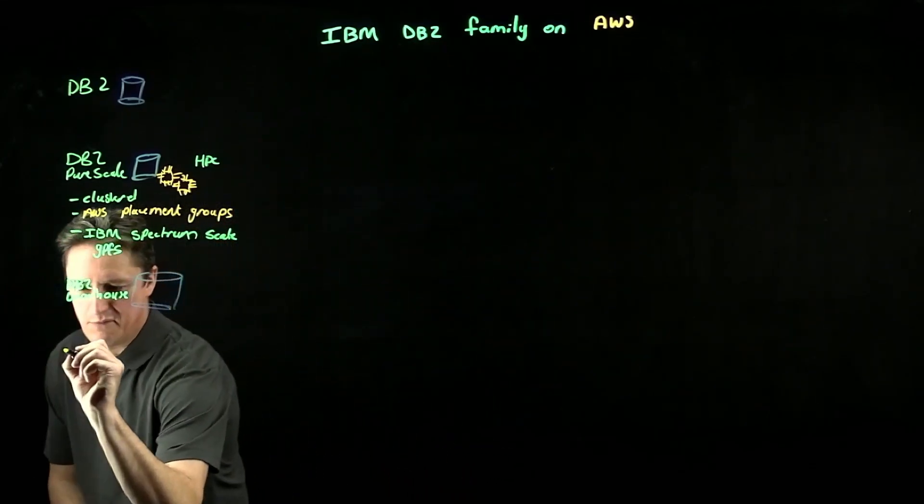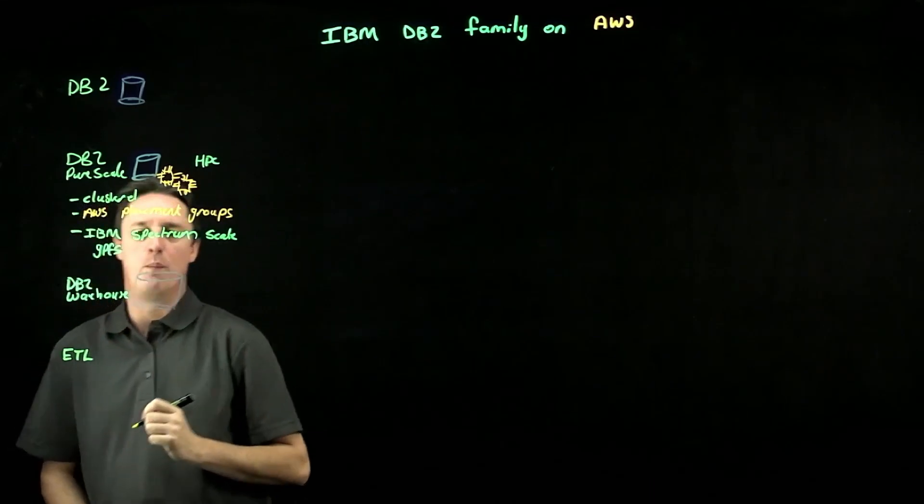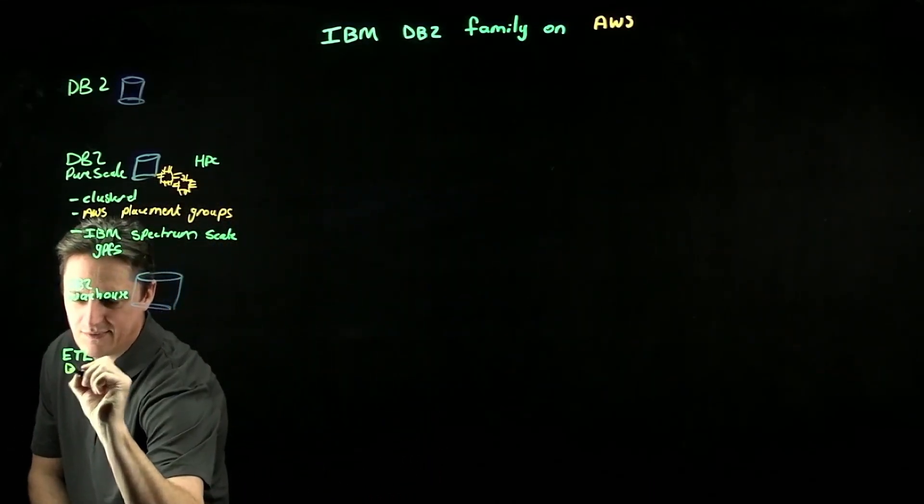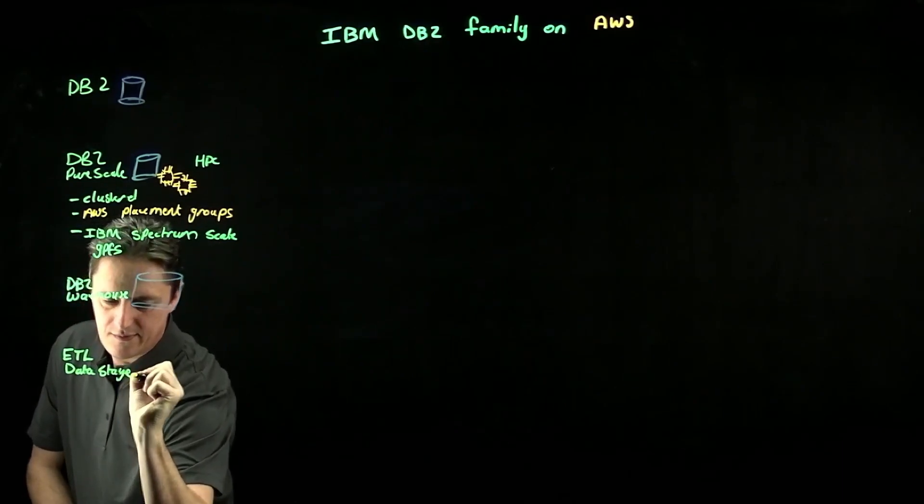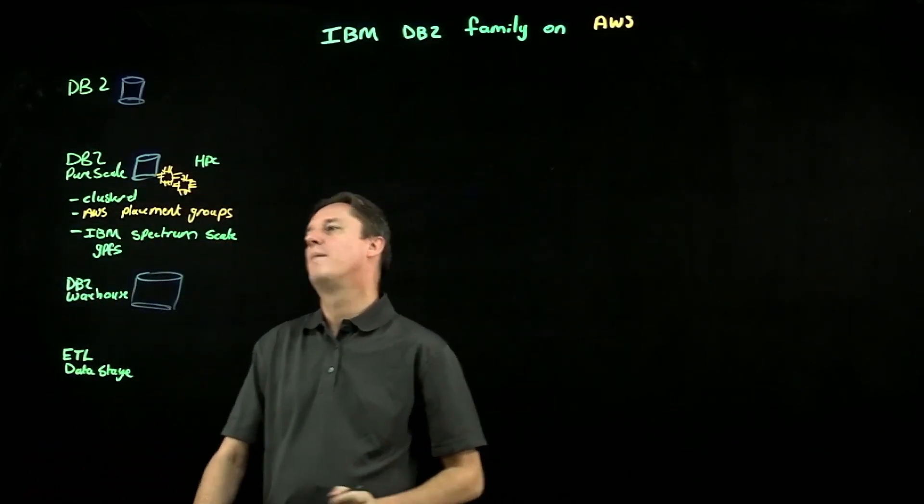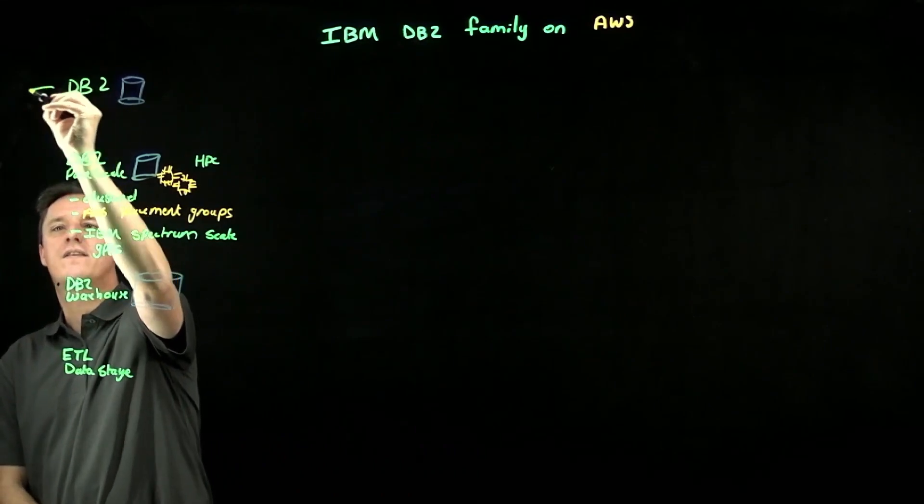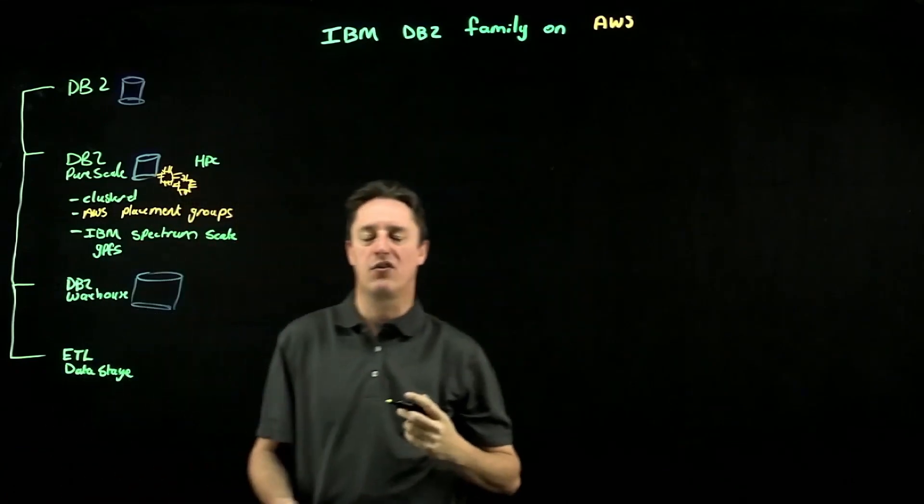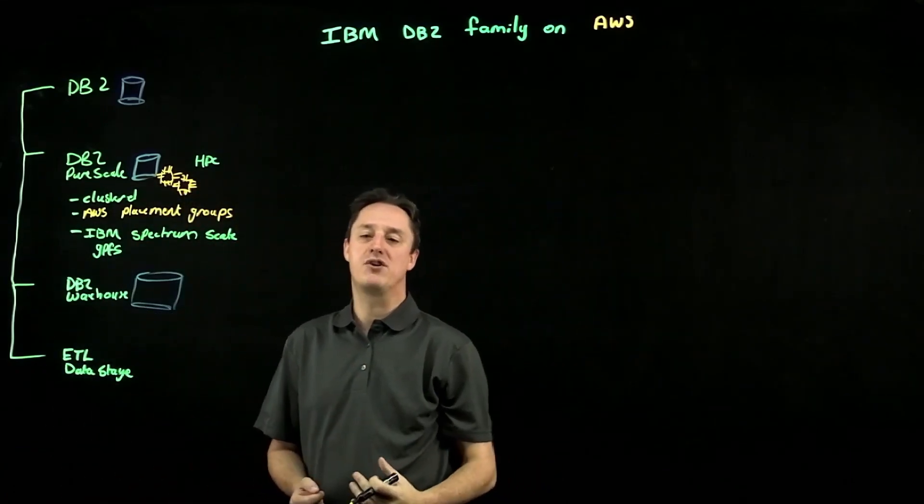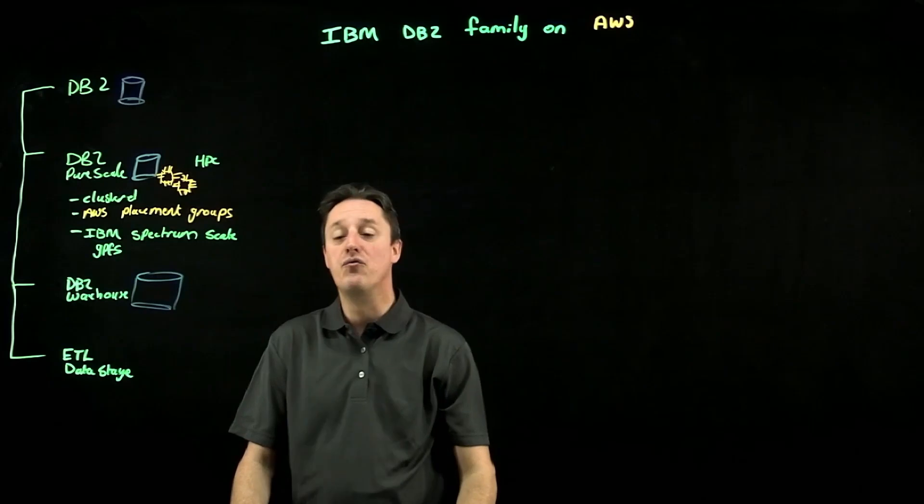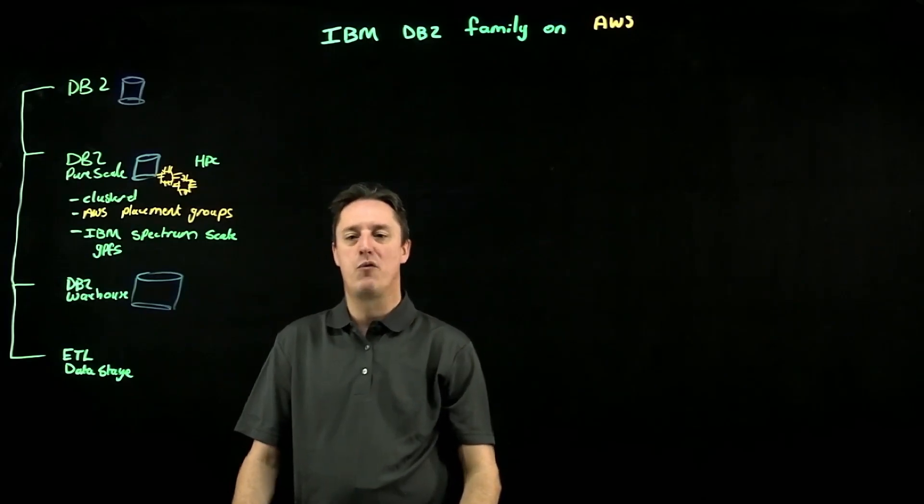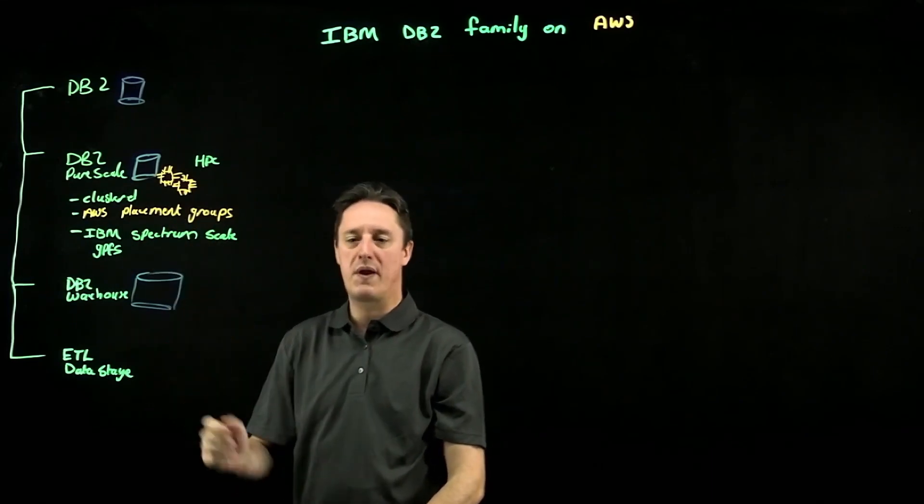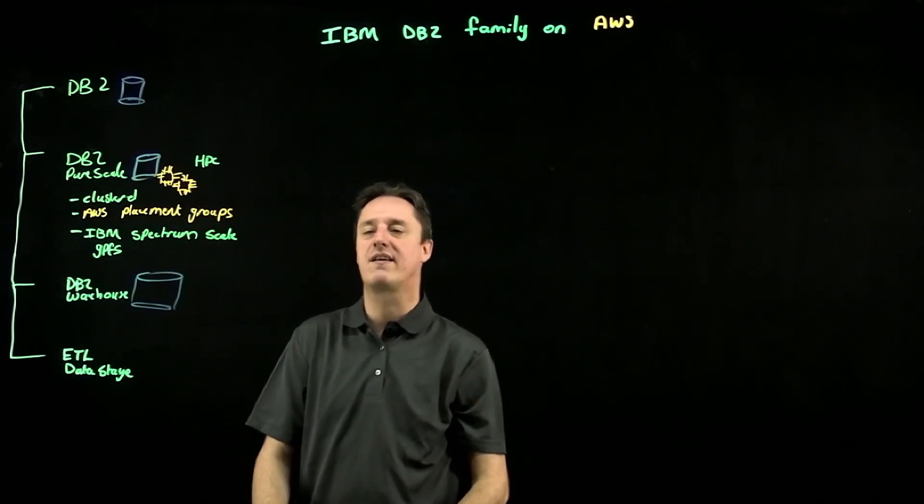So we will have an Extract, Transform, and Load product. In the case here we will typically see Data Stage coming into the picture. What Data Stage does is connect to all of these different data sources and help me move information around or do the transformations as required. It's really not uncommon for me to see a customer that has a variety of these—they'll have a DB2 in combination with DB2 Warehouse or they'll have Data Stage as well.